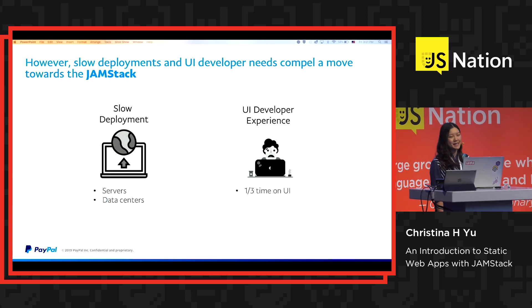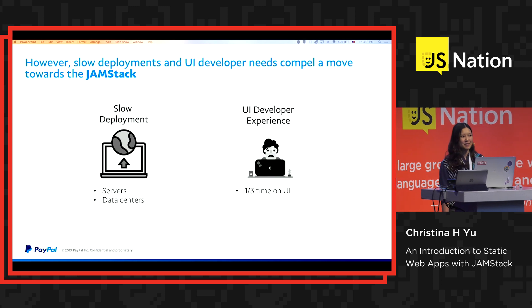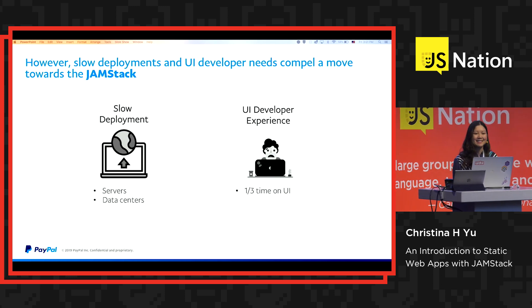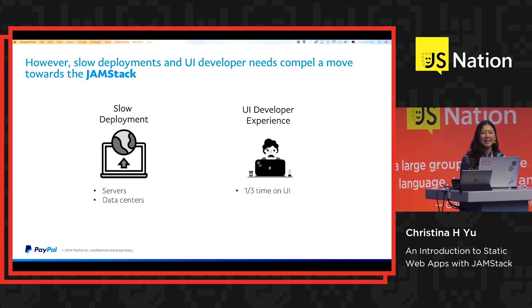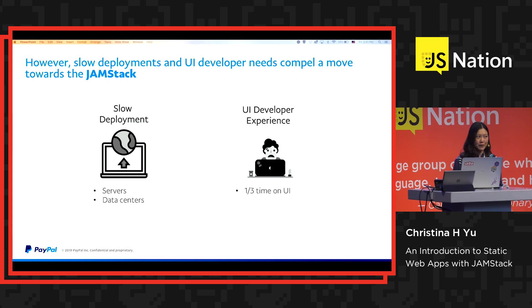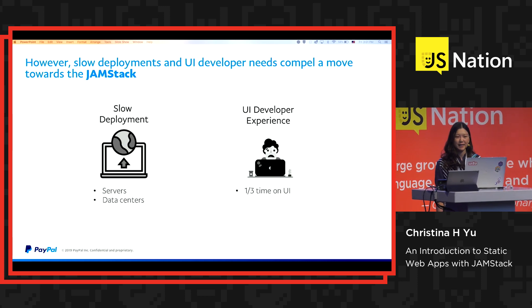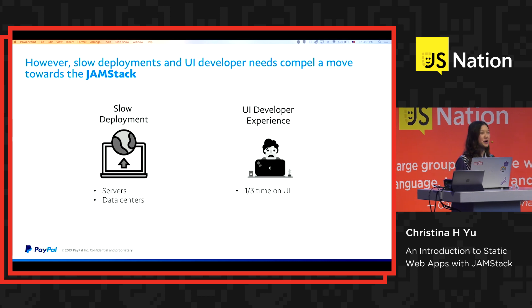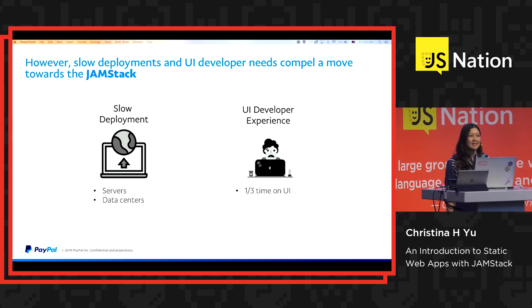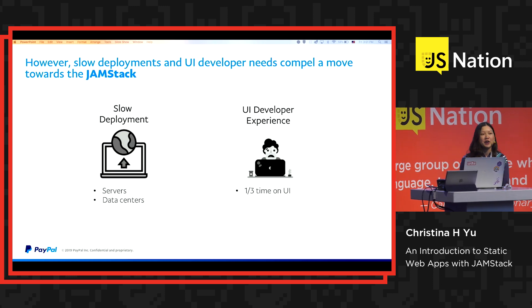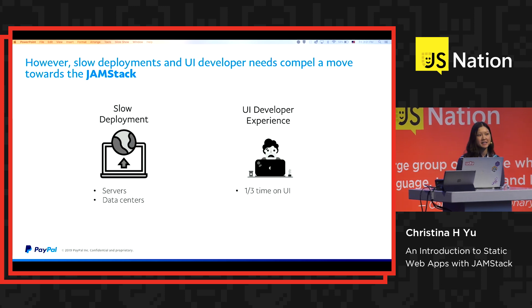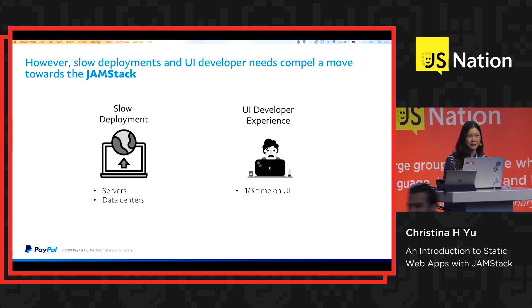However, as Node scaled, we ran into some serious pain points. On one hand, deployments were really slow. The Send Money PayPal app takes three to four hours to deploy over 400 servers in five data centers. In terms of UI developer experience, we found that UI developers were only spending one-third of their time on UI. Two-thirds of their time was spent on figuring out how and where to fetch data. Instead, UI developers wanted to hone their design skills, look at the latest customer-perceived latency reduction techniques, and focus on delivering an awesome user and developer experience.